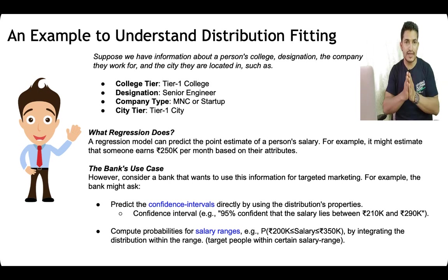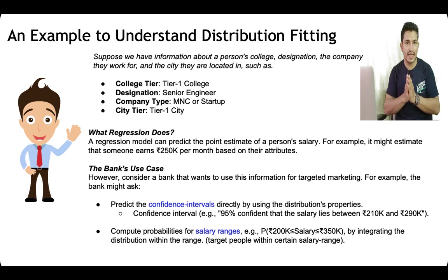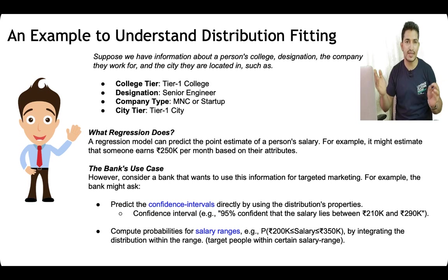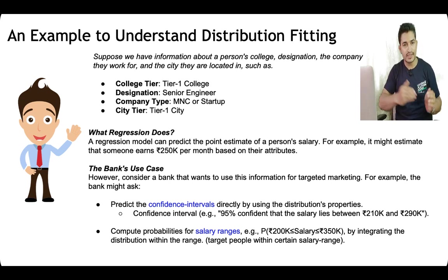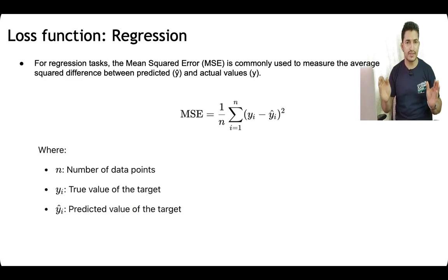To answer such questions about the confidence interval around salary, or predicting the probability that salary lies in a particular range, it is possible if we fit a distribution to the data instead of formulating the problem as a regression problem. The distribution fitting approach will give us a range estimate, and the loss function also differs between the two cases.